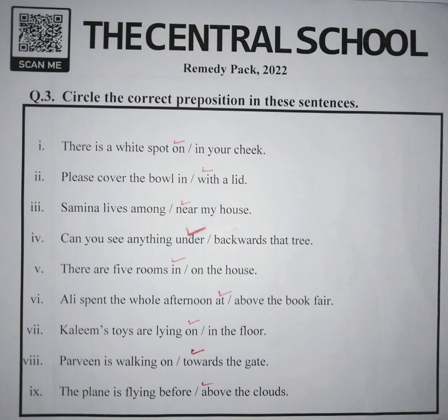So the whole sentence will be: there are five rooms in the house. Our sixth sentence is: Ali spent the whole afternoon at slash above the book fair. Here, the correct preposition is 'at' as it is locating the place.